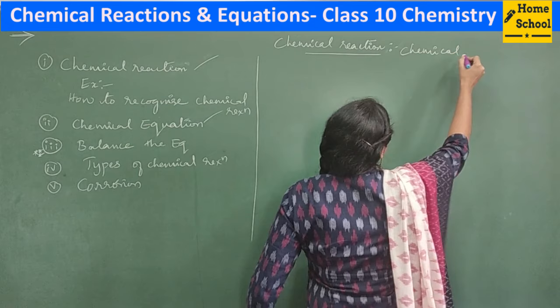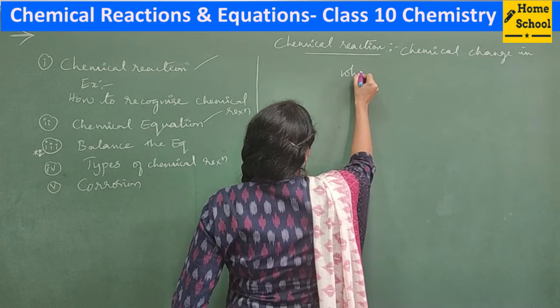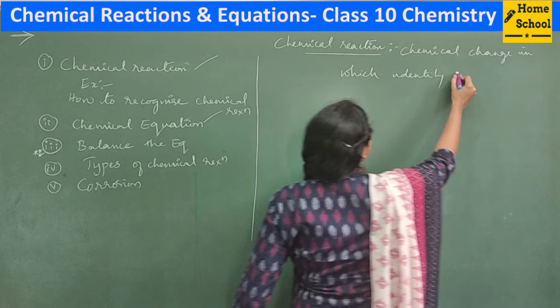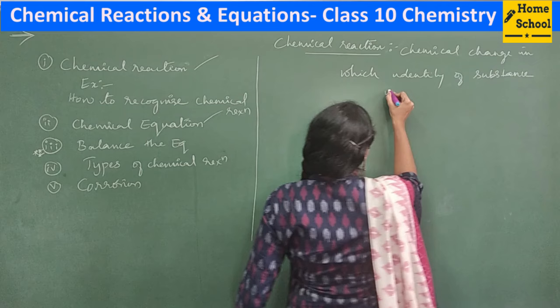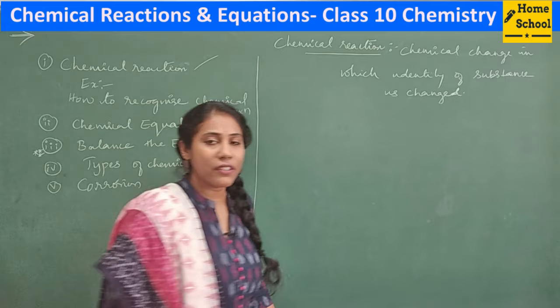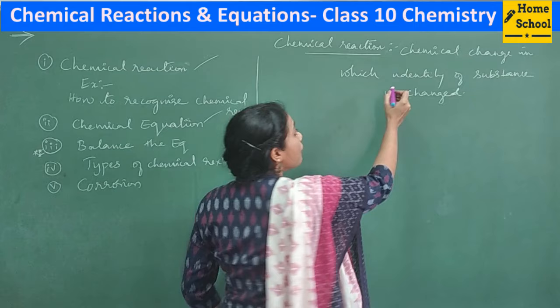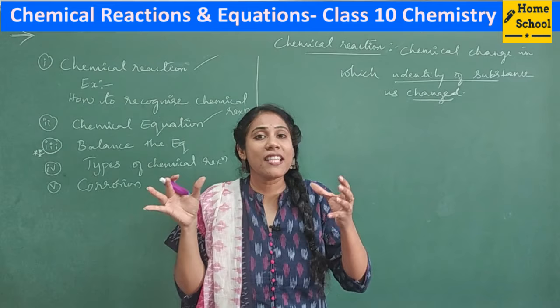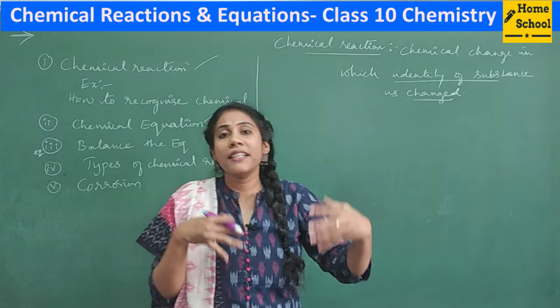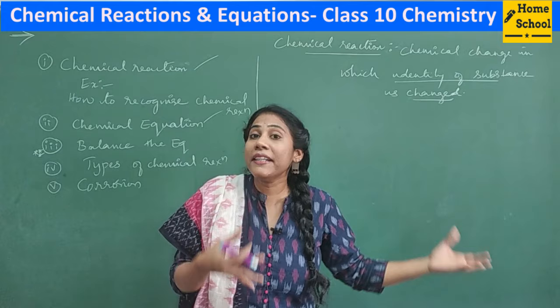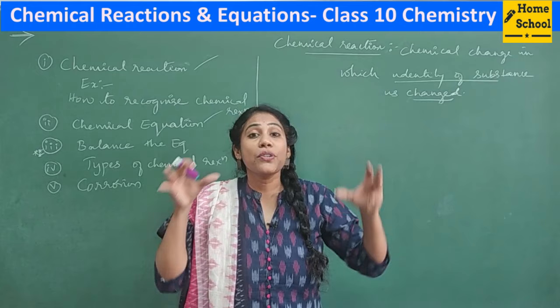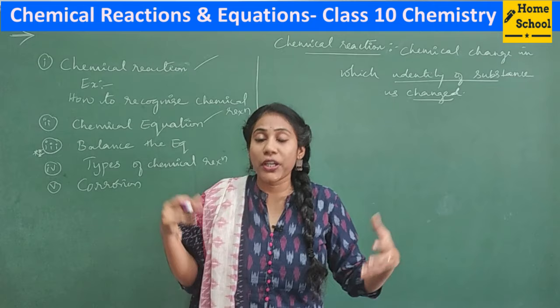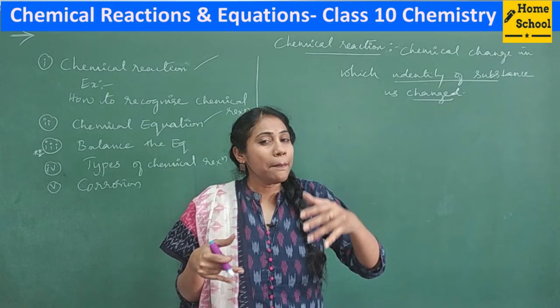A chemical reaction is nothing but a chemical change in which the identity of the substance is changed. What do we mean by identity of the substance being changed? The formula of a substance will be changed. If the molecular formula is completely changed into something new, then it becomes a completely new substance, very different from the original one. Such a change is called a chemical change, and this chemical change itself we call a chemical reaction.